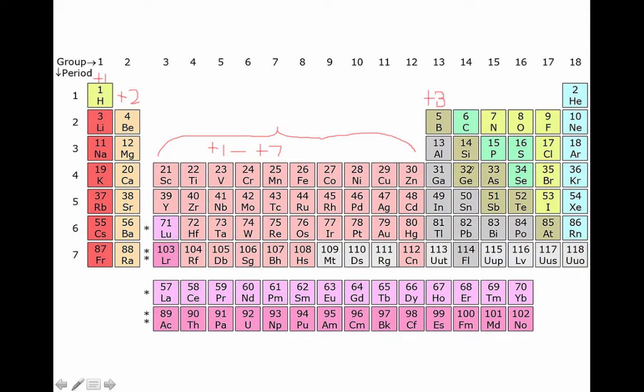Now carbon, silicon, germanium, these tend not to form cations because they don't form ionic compounds, they form covalent compounds. But tin and lead, these elements do form ionic compounds. And they're very similar to the transition metals. They do some funky things.